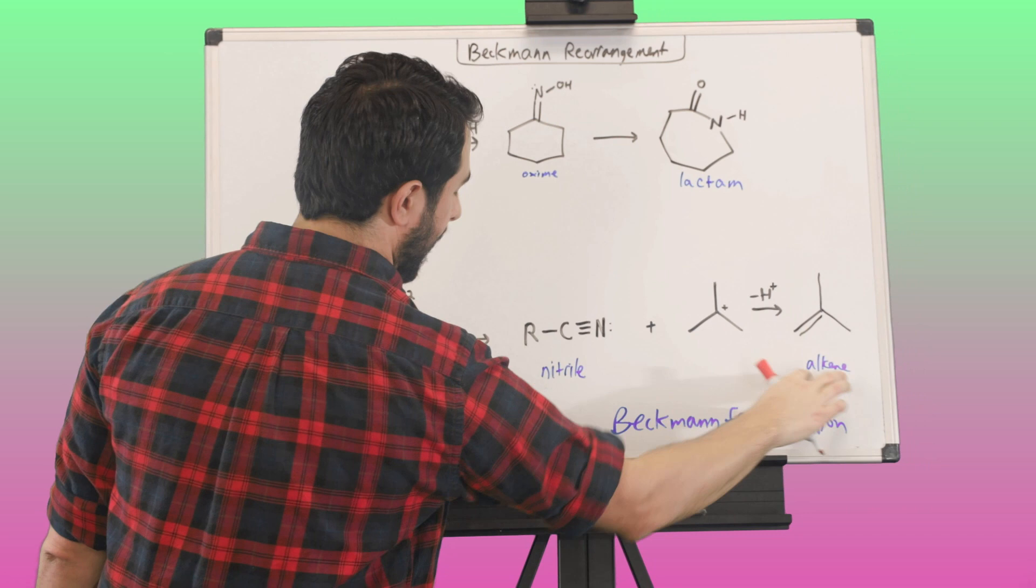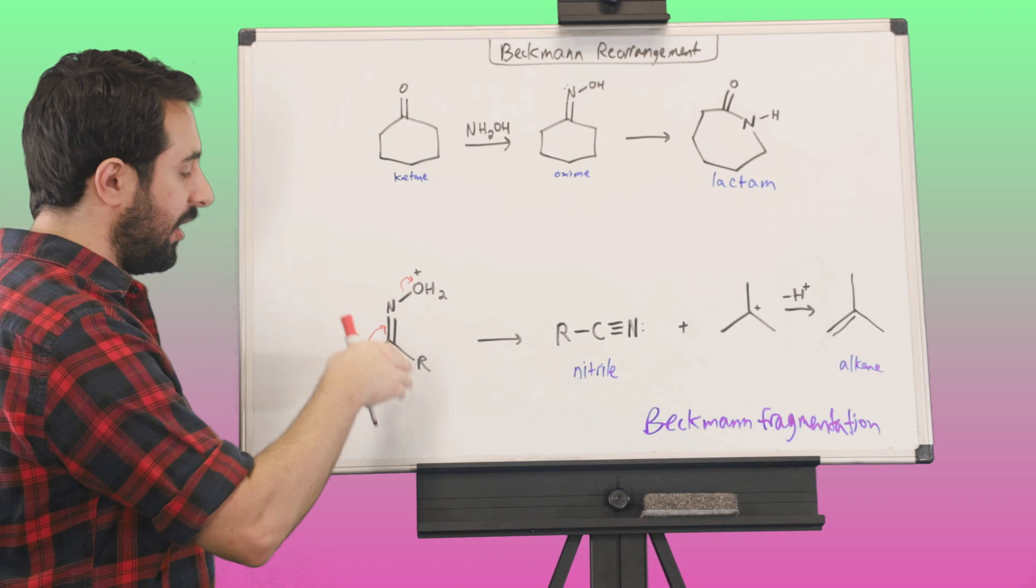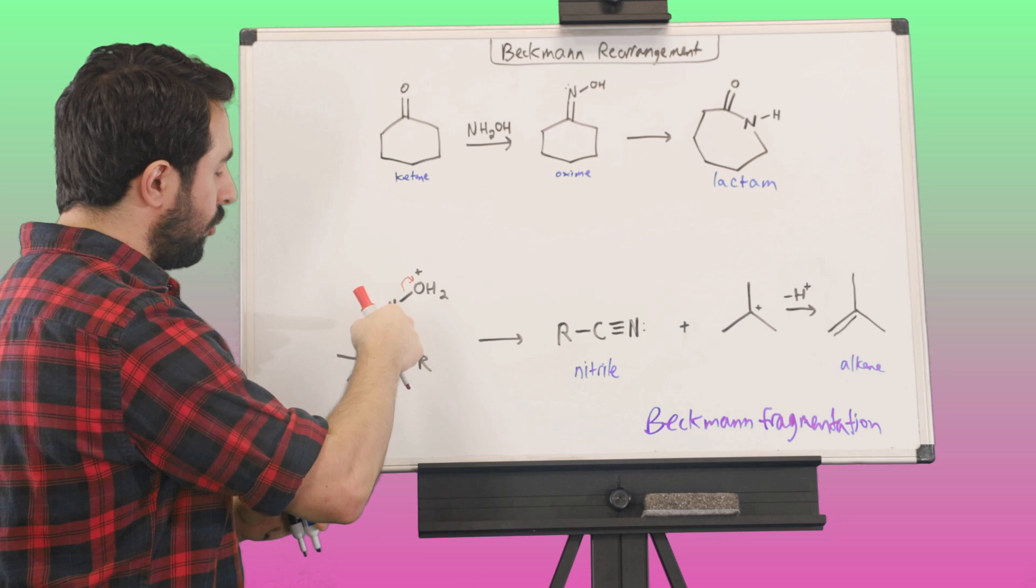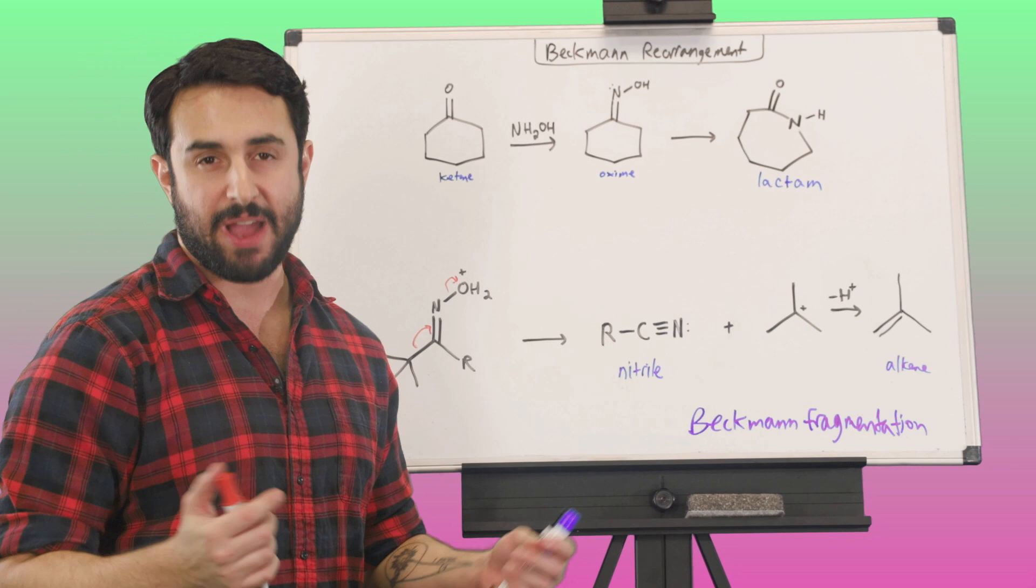And so, this is just something to be aware of. If you have a situation like this, where you have a lot of branching, right, this carbon is connected to three other carbons. So, it's energetically feasible for this to remain on its own without having to gain another bond to nitrogen. So, this is the Beckman fragmentation. This is the one main limitation we need to be aware of when looking at Beckman rearrangement. But that's a little overview of the Beckman rearrangement.